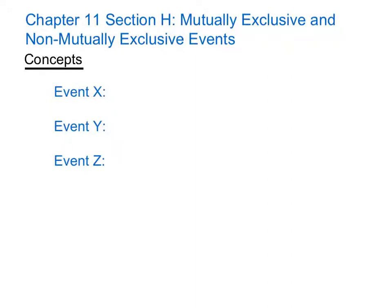In this video we'll be looking at Chapter 11, Section H on Mutually Exclusive and Non-Mutually Exclusive Events. Let's consider drawing at random a card from a normal deck of playing cards, which usually has 52 cards. Consider the following possible events: Event X is the card is a heart, Event Y is the card is an ace, and Event Z is the card is a 7.